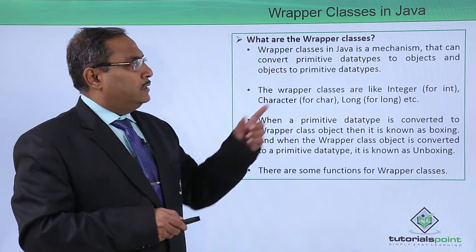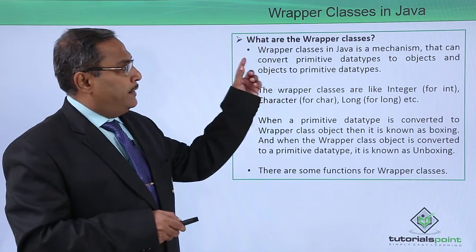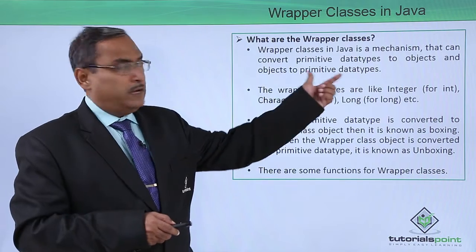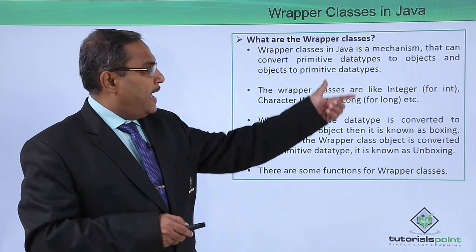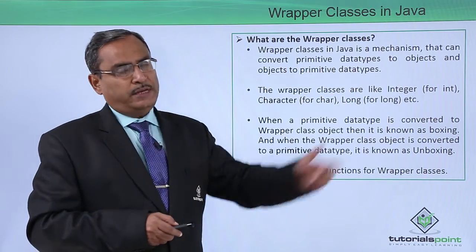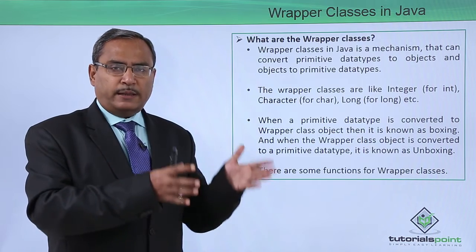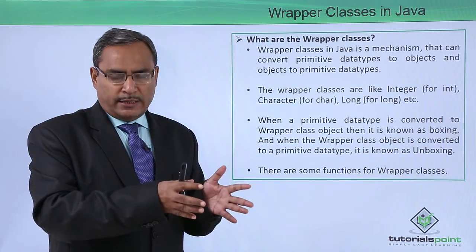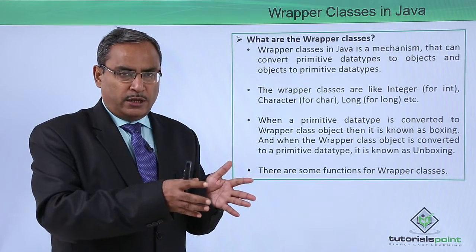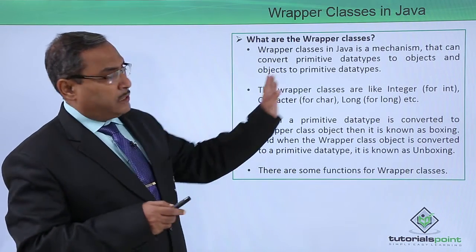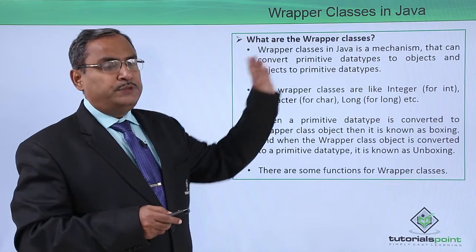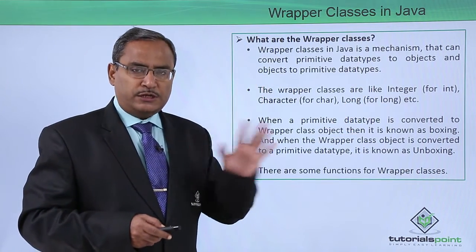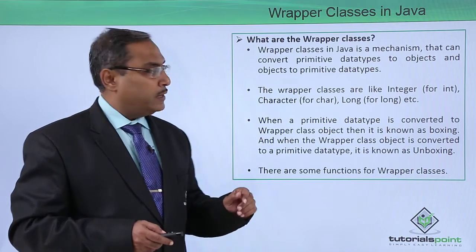What are the wrapper classes? Wrapper classes in Java is a mechanism that can convert primitive data types to objects, and objects to primitive data types. That means we are converting primitive data types — let it be int, char, or float — to the respective objects, and from objects back to primitive data types. Both directions of conversion can take place in the case of wrapper classes.